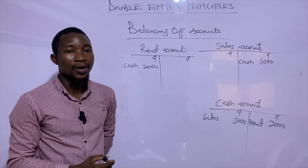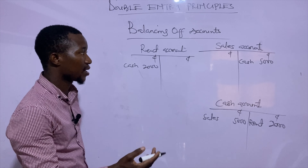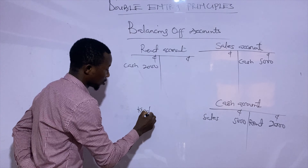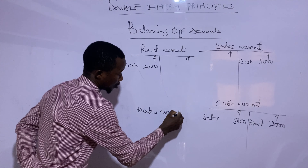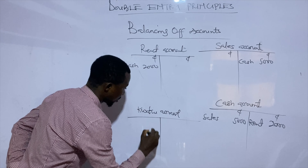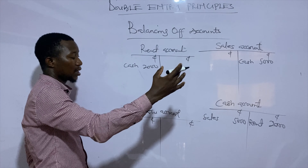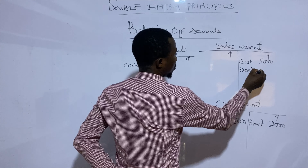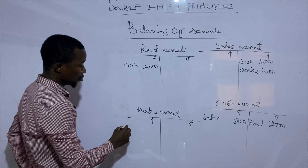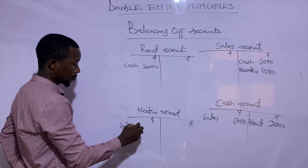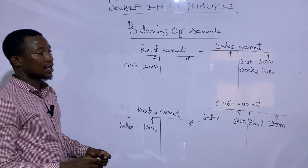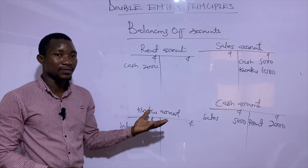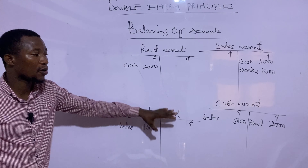There is another transaction: credit sales to Kweku for 1,000. We have a sales account and Kweku's account. Our sales is going out and Kweku is receiving the products, so we credit sales in the name of Kweku for 1,000. Kweku is receiving from sales and it is 1,000. Let's assume these are all the entries we've made in these accounts, so we now need to learn how to balance off these accounts.